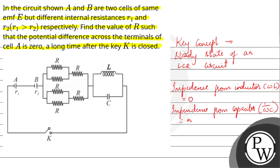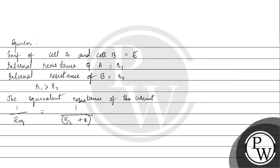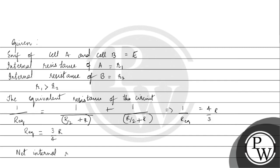Adding again 1 by (R/2 + R), we get 1 over R-equivalent as 4 by 3R. Therefore the equivalent resistance of this circuit is 3 by 4 R. Now, the net internal resistance is R1 plus R2.